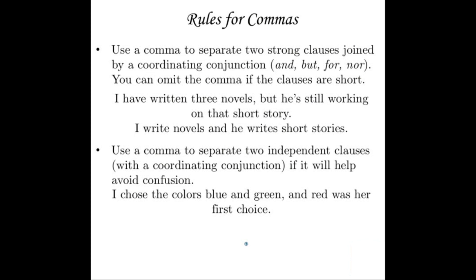Use a comma to separate two strong clauses joined by a coordinating conjunction — and, but, for, nor. Check the lesson on conjunctions in basic grammar if you're lost on those. You can omit the comma if the clauses are short. So: "I have written three novels, but he's still working on that short story" — two strong clauses joined with a comma and but. But "I write novels and he writes short stories" is short enough that no comma is needed, though you can use one if you want.